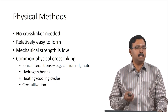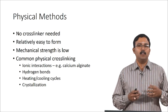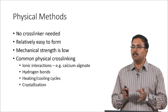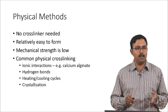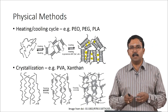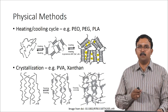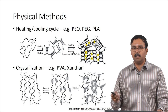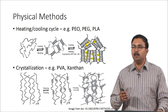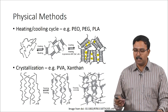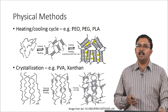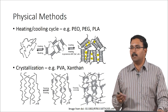Common physical crosslinking methods include ionic interactions, hydrogen bonds, heating and cooling cycles, and crystallization. In a heating and cooling cycle, repeated cycles cause coils to form, and in a second step the same heating and cooling is done along with ions like sodium or potassium ions to stabilize these structures, thereby forming physical crosslinks. This method is usually done for PEG, PLA, and PEO.